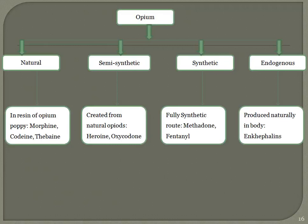Opiates are classified as natural (morphine, codeine, thebaine), semi-synthetic (oxycodone, heroin), fully synthetic (methadone, fentanyl), and endogenous (produced naturally in the body, such as enkephalins). They are also classified by activity: agonists, mixed agonist-antagonists, and antagonists. Examples: buprenorphine and nalbuphine are mixed agonist-antagonists; naloxone and naltrexone are antagonists.